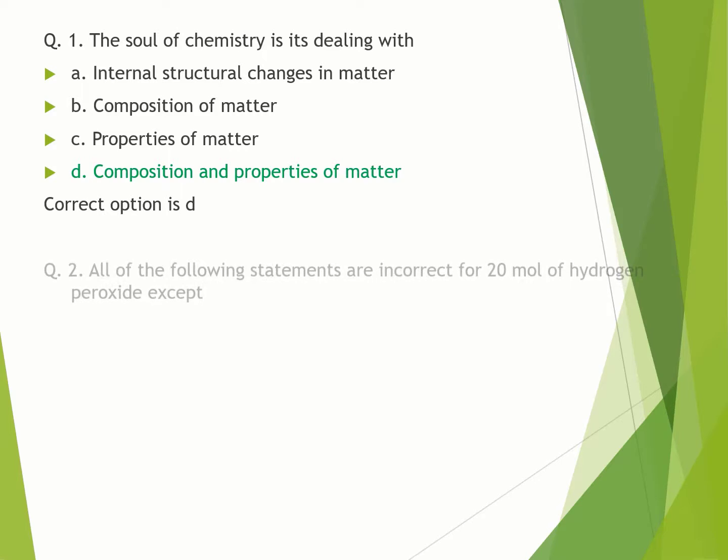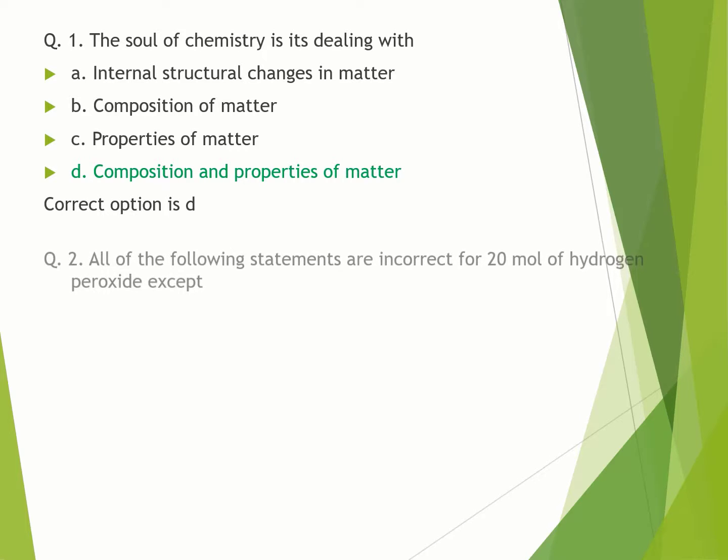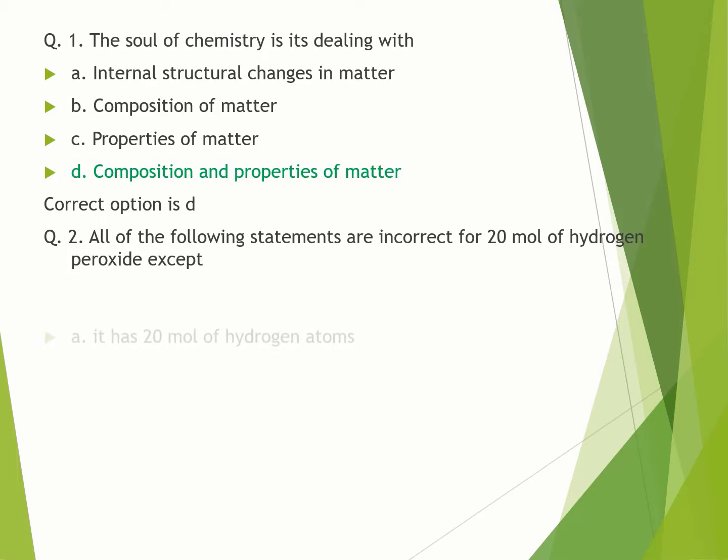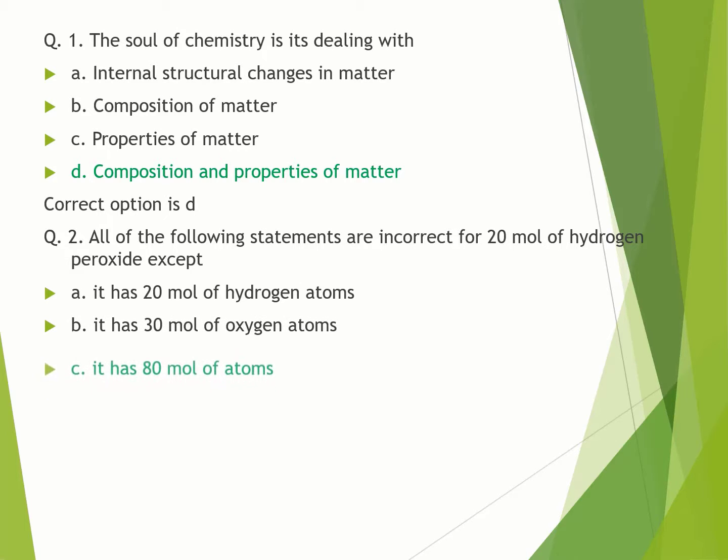Question number 2. All of the following statements are incorrect for 20 moles of hydrogen peroxide except: A. It has 20 moles of hydrogen atoms. B. It has 30 moles of oxygen atoms. C. It has 80 moles of atoms. D. 30 moles of hydrogen atoms. Correct option is C.